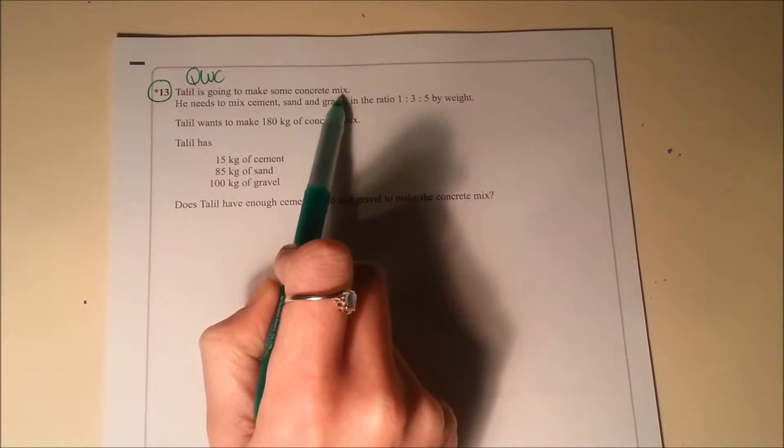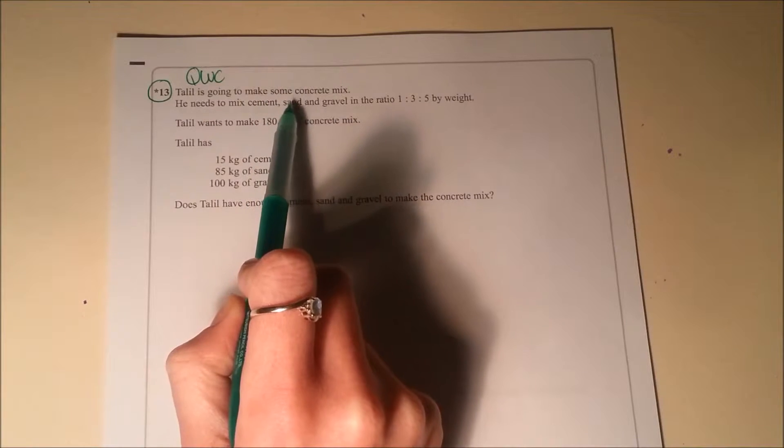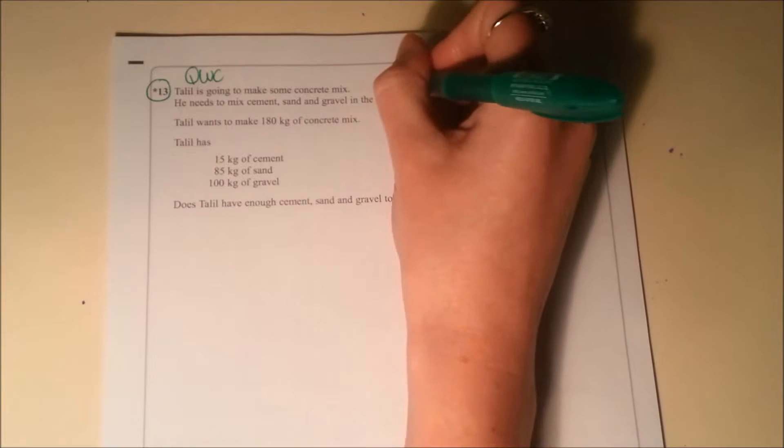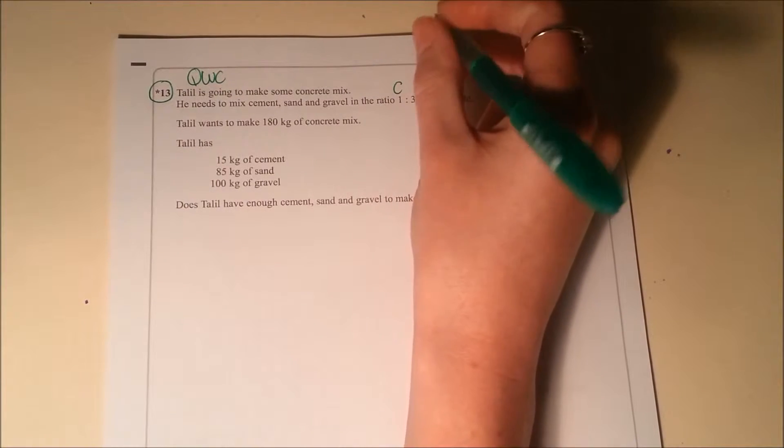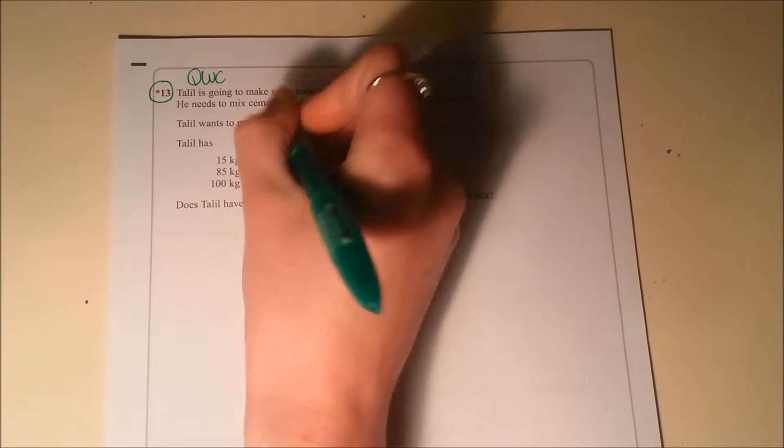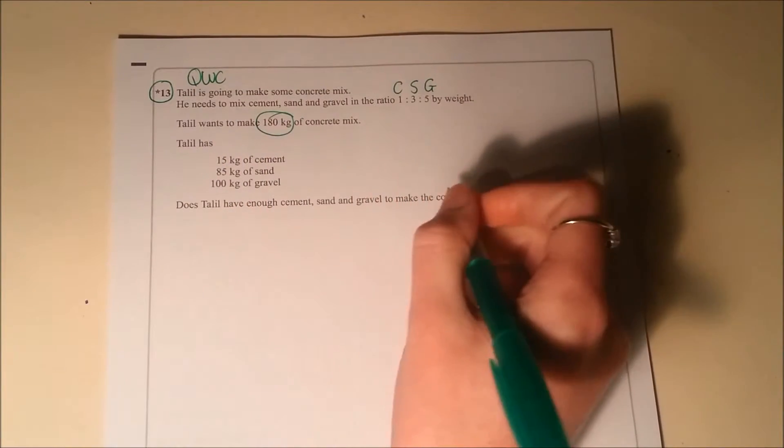Talil is going to make some concrete mix. He needs to mix cement, sand and gravel in the ratio 1 to 3 to 5 by weight. So remember the 1 is your cement, the 3 is the sand, the 5 is the gravel.